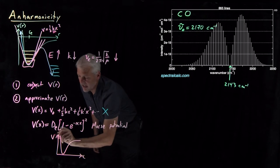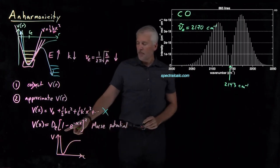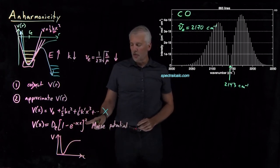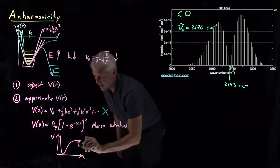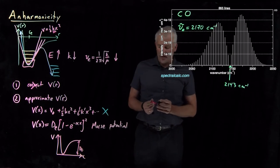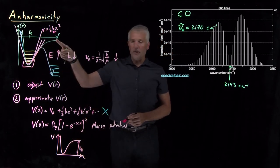So potential energy as a function of position, this one minus an exponential squared multiplied by some constant that represents the amount of energy it takes to break that covalent bond.